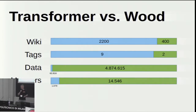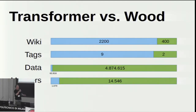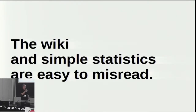Wrapping up on the transformer versus wood distinction: transformer wins on the wiki, and wins when you look at the number of extra tags documented. However, if you look at the data, you'll find 4.8 million wood objects versus 62,000 tagged as transformers. And if you look at people who have actually used the tag five times or more, you will find 40,000 mappers who have tagged a wood object and 1,000 people who have tagged a transformer object. So this is what proper statistics looks like when you want to dig to the bottom of it. It's very easy to misinterpret things with just a quick look at the wiki.